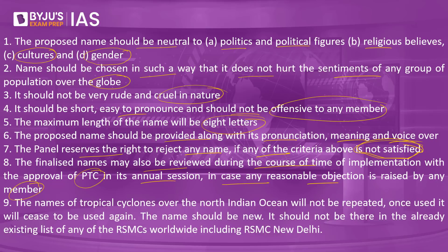In case reasonable objections are raised, the country would be given another chance to propose a new name, which will be added to the list. Finally, the names of tropical cyclones over the North Indian region will not be repeated — once used, a name will cease to be used again. The name should be new and should not already exist in any RSMC's list worldwide, including RSMC New Delhi. Once a name has been assigned to a cyclone that caused devastation, that name will not be reused, avoiding confusion in the future.